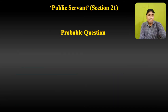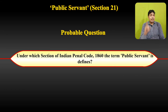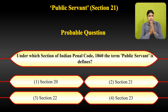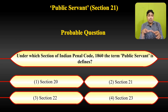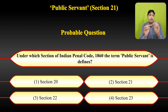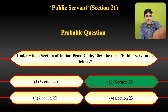A probable question which may be asked by the examiner: 'Under which section of the Indian Penal Code 1860 is the term public servant defined?' The options are Section 20, 21, 22, and 23. As we can see from the heading on the slide, the definition of public servant is given under Section 21 of the Indian Penal Code. So Section 21 is the correct answer.